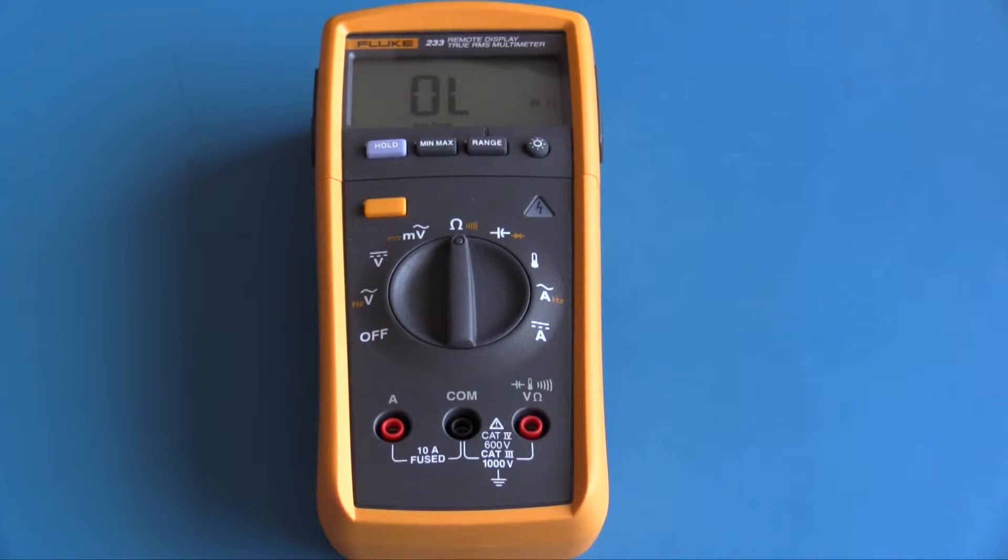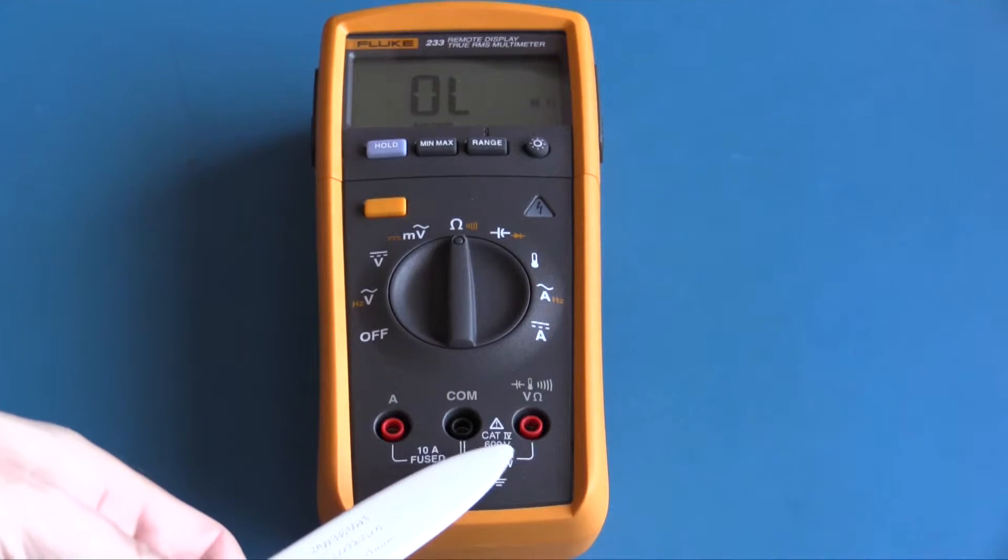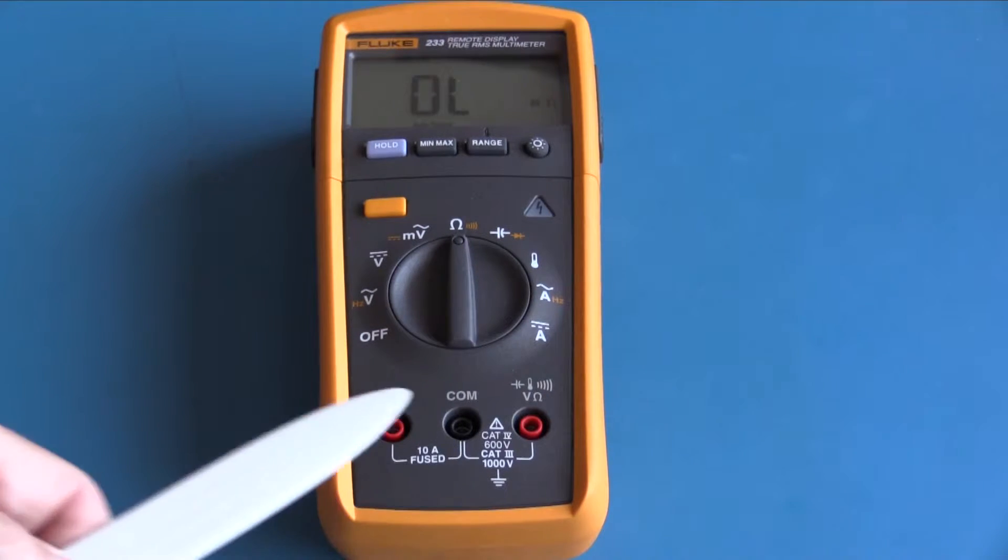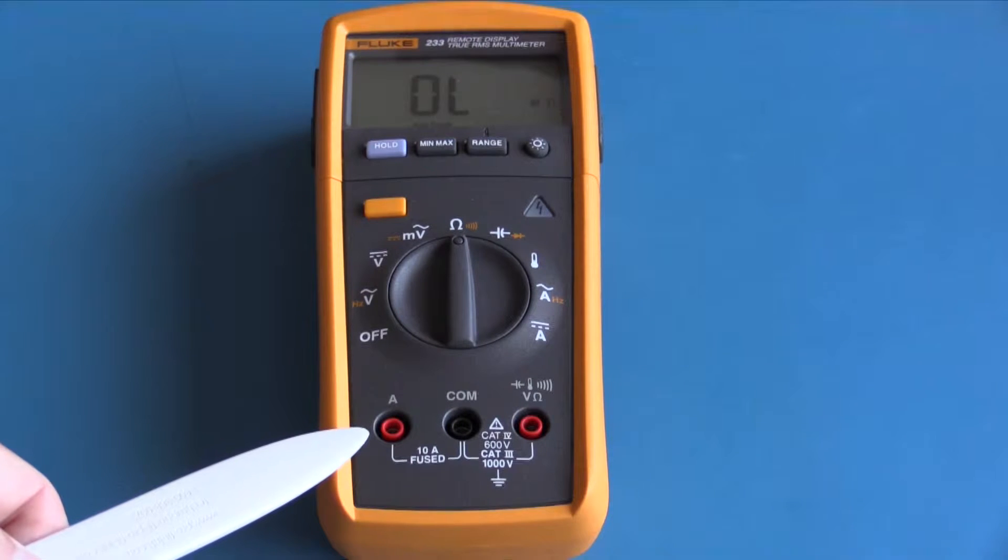This meter has three input jacks. The first input jack is for voltage, ohms, diode, capacitance and temperature. This is your common and this is current measurement. It has a 10 amp fuse.